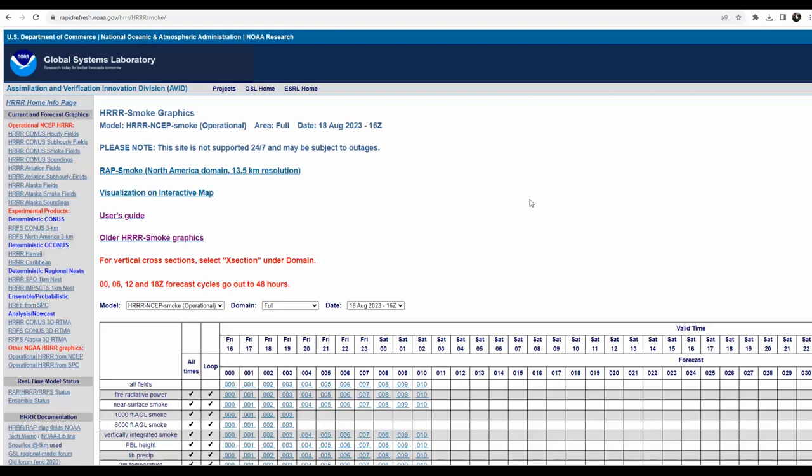It's not completely intuitive to get to that graphic loop that we just saw here previously, so I'm going to quickly show you how to do that to save you a bit of time. The first thing you want to do is go over here if you can see my cursor, and the model that we're picking is the HRRR NCEP Smoke operational model. Domain we'll leave as full, but here under the date where that becomes more influential on what we're doing.